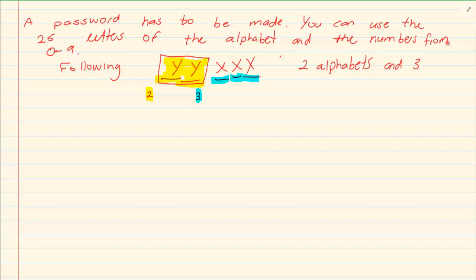Let us take the same question that we had earlier. You have to make a password. You can use 26 letters of the alphabet and the numbers from 0 to 9. The following set has to be made: 2 letters and 3 numbers. But what is different?